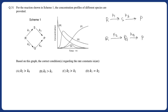Now look at the profile diagram. One thing is very clear — R is on the reactant side so its concentration is decreasing. P's concentration is increasing at a higher range, which means the rate constant associated with the formation of P should be bigger.